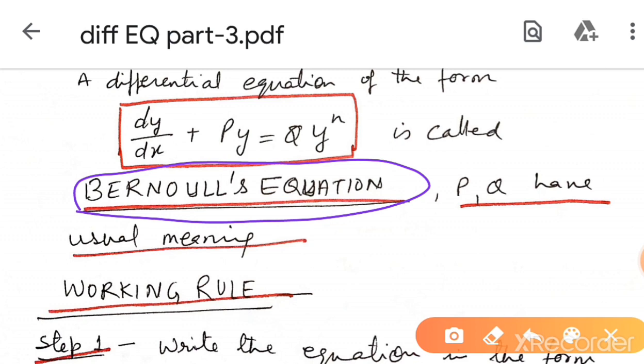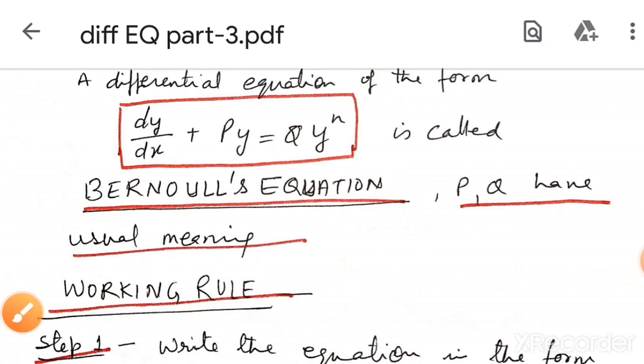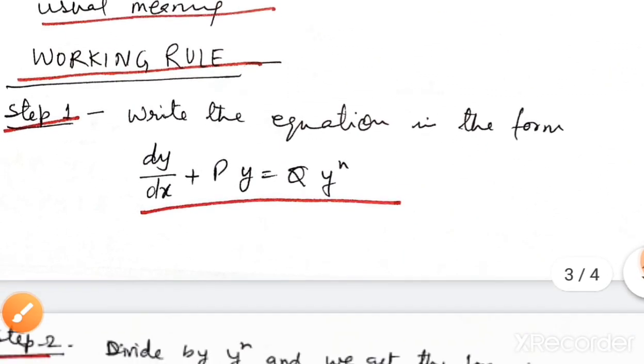Now we consider the Bernoulli equation: dy by dx plus p y equal to q y to the power n, where p and q are functions of x only.